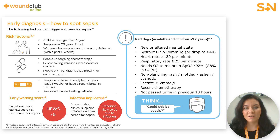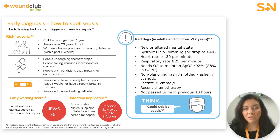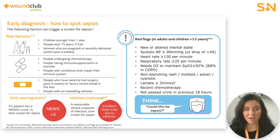NICE guidelines also include a series of amber flags — less urgent in terms of triggering action, but still very important in terms of understanding the patient's risk of deterioration. The red flags for adults and children over the age of 12 include: a new or altered mental state, being unable to stand or being collapsed, being unable to catch their breath or a high respiratory rate, skin that is very pale, mottled, ashen or blue, a rash that doesn't fade when pressed, recent chemotherapy, or not having passed any urine in the previous 18 hours. If a person presents with signs or symptoms that indicate a possible infection, always think: could this be sepsis? Sepsis can progress very rapidly, so it's important to have a high index of suspicion and act immediately.